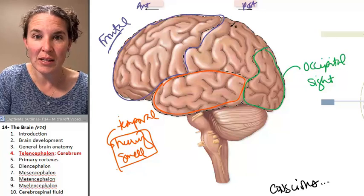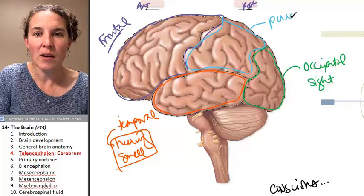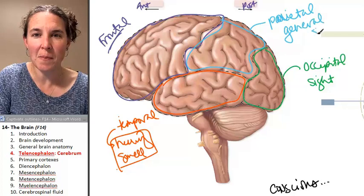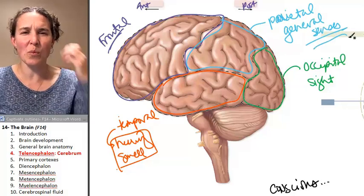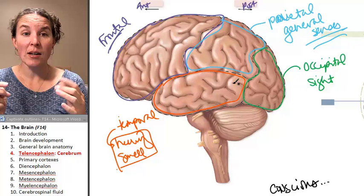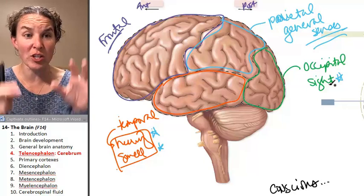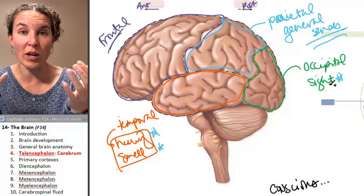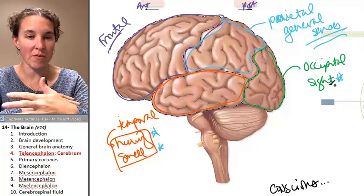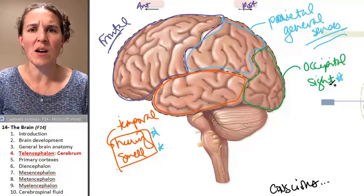The parietal lobe is this top guy right here, and the parietal lobe is primarily general senses. General senses like pressure, touch, heat, cold - not special senses such as hearing, smell, sight. Those are special senses. We actually have special sensory structures, organs that are responsible for bringing in that information. The parietal lobe takes care of more general sensory input. A lot of the receptors there are in your skin.